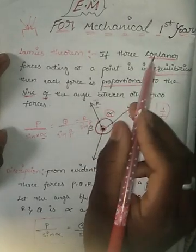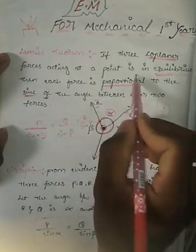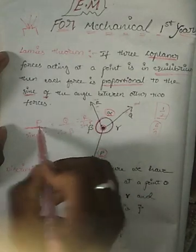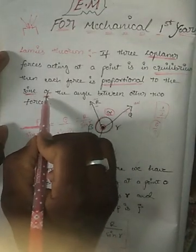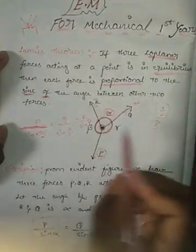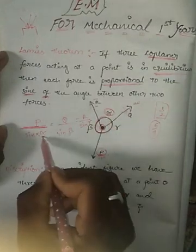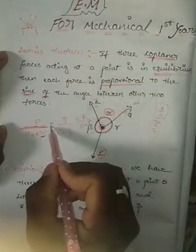So Lamy's theorem states: if three coplanar forces — forces acting on the same plane — acting at a point are in equilibrium, meaning the three forces are equal at one point, then each force is proportional to the sine of the angle between the other two forces. So we write P by sine alpha, Q by sine beta, R by sine gamma — all equal.